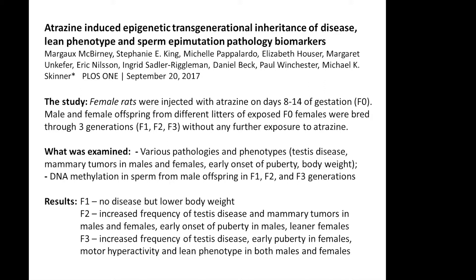The study involved treatment of female pregnant rats with atrazine for just six or seven days — this is the F0 generation. Then male and female offspring from subsequent litters of the exposed F0 females were bred through three generations without any further exposure to atrazine. What they looked at were various pathologies and phenotypes, as well as DNA methylation in the sperm from male offspring in generations F1, F2, and F3.